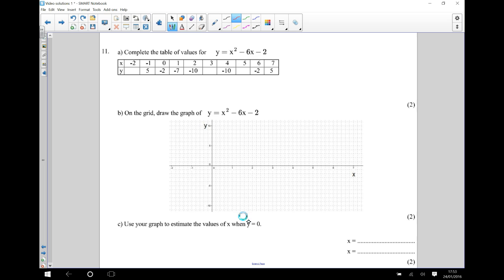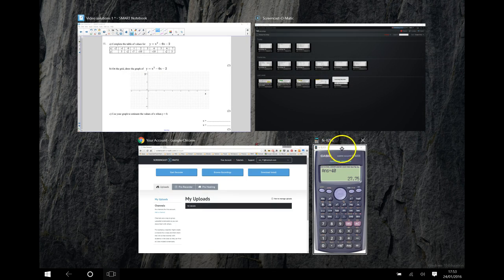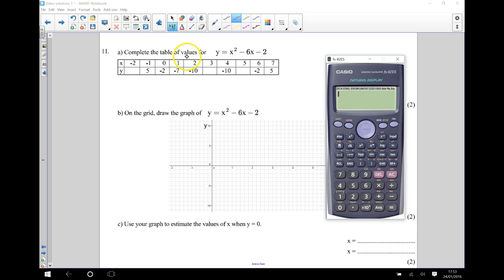Now we should be able to use a calculator for this, so I'm just going to load up my calculator here. Right, so we're saying that the y coordinate is equal to the x coordinate squared take away 6 times the x coordinate take away 2.